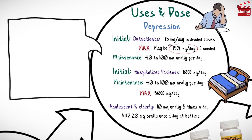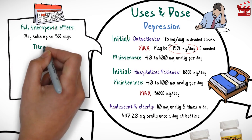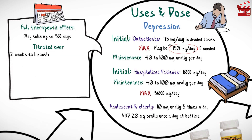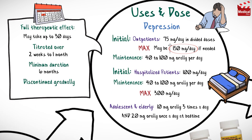The full therapeutic effect may take as long as 30 days to develop. Dose should be titrated over 2 weeks to 1 month, and the minimum duration of treatment is 6 months. Treatment should be discontinued gradually over 4 weeks to lessen the possibility of relapse.